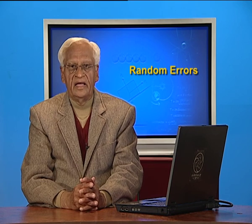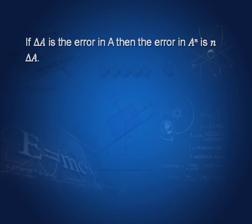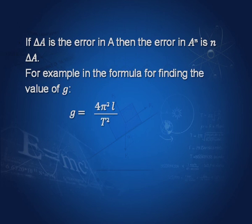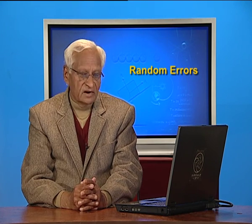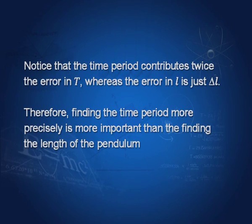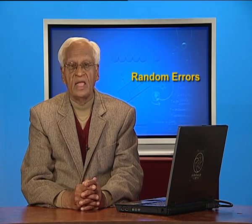If ΔA is the error in A, then the error in Aⁿ is n times ΔA. For example, in the formula for finding G, where G = 4π²L/T², the maximum error in G is ΔG = ΔL/L + 2ΔT/T. Notice that the time period contributes twice the error in T, whereas the error in L is just ΔL/L. That means time must be measured more precisely than the length.